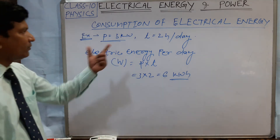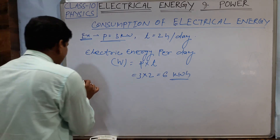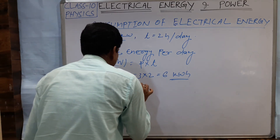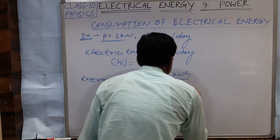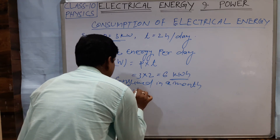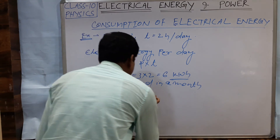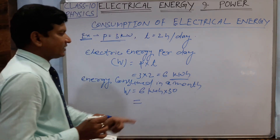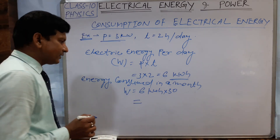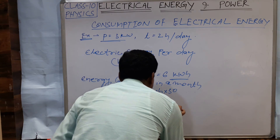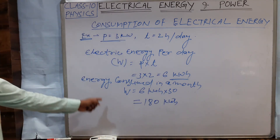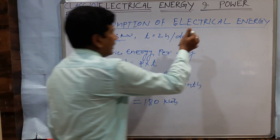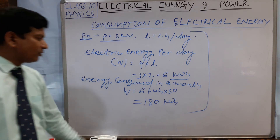To find the electric energy consumed by the geyser in a month of 30 days: W = 6 kilowatt hour × 30 = 180 kilowatt hour. So the electric energy consumed by the geyser in a month is 180 kilowatt hour. This is how you find the electric energy consumed by an electrical appliance.